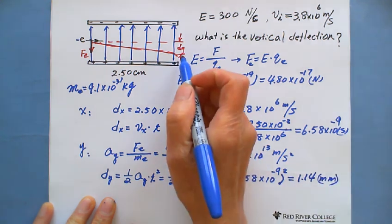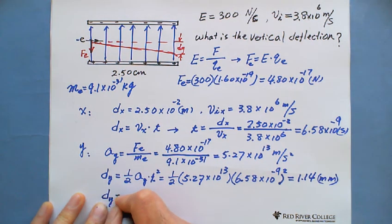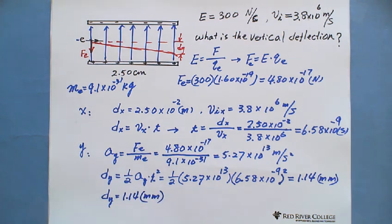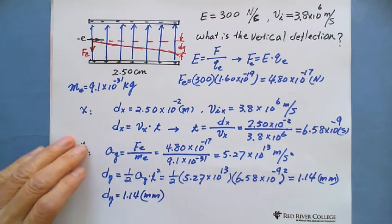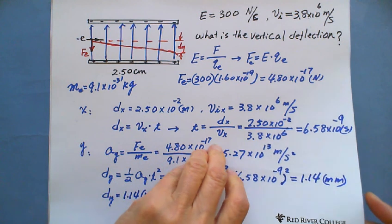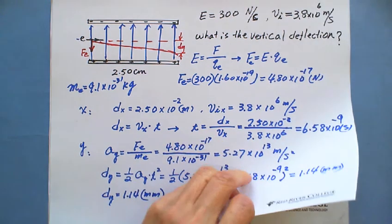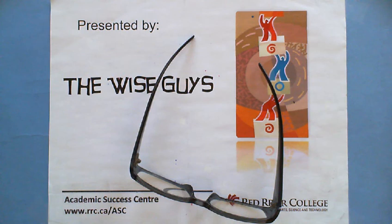The vertical deflection dy equals 1.14 millimeters. So this is presented by Wiseguides. Thank you.